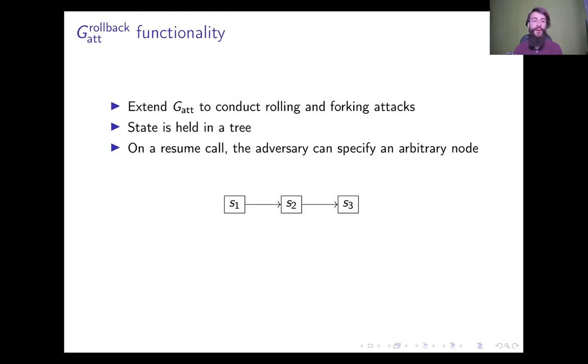We also model the addition of rollback adversaries to the global attestation functionality. These adversaries are able to conduct two kinds of attacks, rolling and forking attacks. We modify the global attestation functionality so that rather than storing a single state, it stores a tree of derived states. In the honest case, this will look very similar to a linked list, as in the figure, where between each evaluation, the memory simply advances. However, a corrupted party can specify whenever they resume the enclave an arbitrary location in the tree to resume the call from.